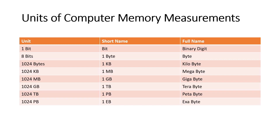Units of Computer Memory Measurement: 1 bit (binary digit), 8 bits = 1 byte, 1024 bytes = 1 kilobyte (KB), 1024 KB = 1 megabyte (MB), 1024 MB = 1 gigabyte (GB), 1024 GB = 1 terabyte (TB), 1024 TB = 1 petabyte (PB), 1024 PB = 1 exabyte (EB). Yeh thi computer ki memory measurement units.